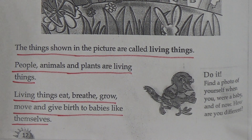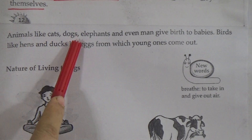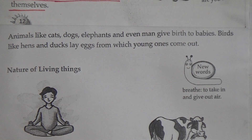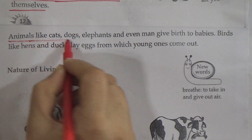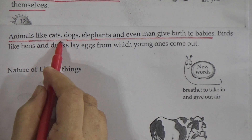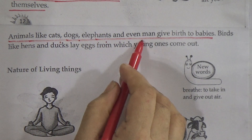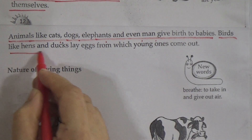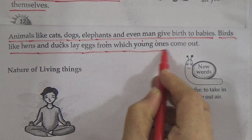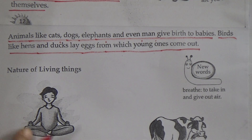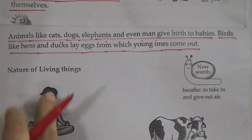Now go to the next page, page number 13. Animals like cats, dogs, elephants, and even men give birth to babies. This is also an important line — underline it and memorize it. Birds like hens and ducks lay eggs, from which young ones come out. Now see this figure showing the nature of living things.